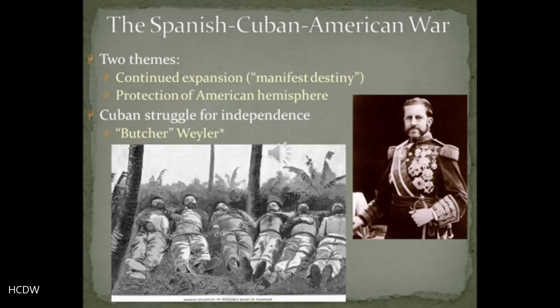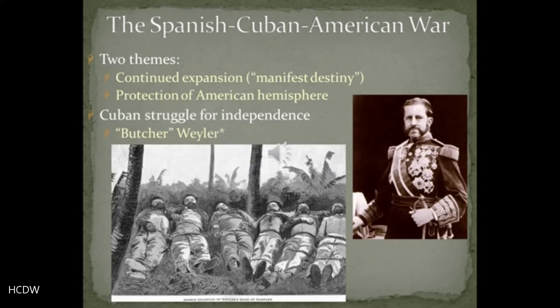One of them was the thought of continued expansion — the continued thought of manifest destiny, which we've talked about a number of times earlier in the course. This is also in keeping with Frederick Jackson Turner and the frontier thesis. We're going to continue expanding, looking for further places to expand into, meaning the Pacific Ocean and out across the Pacific to places like Hawaii and the Philippines and elsewhere.